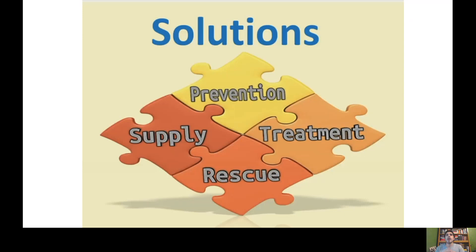How do we solve that? Prevention — preventing people from becoming addicted, which may include public education. Treatment — getting people who are addicted help. Do we approach it the same way we did the crack epidemic and throw people in jail for possession? Probably not. And rescue efforts — naloxone is a drug that can be used to help revive someone who has overdosed, so maybe we need to increase the supply and accessibility of naloxone.